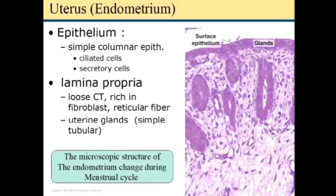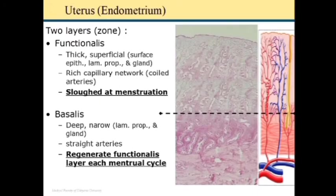The lamina propria is composed of loose connective tissue rich in fibroblasts. There are reticular fibers and uterine glands which are simple tubular. The epithelium dips down and invaginates into the lamina propria to give rise to simple tubular glands, some of which are branched. The microscopic structure of the endometrium changes during the menstrual cycle. The endometrium is composed of two zones: the zona functionalis and the zona basalis. The zona functionalis is the thick superficial layer with surface epithelium, lamina propria, glands, capillary network, and coiled arteries.